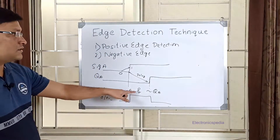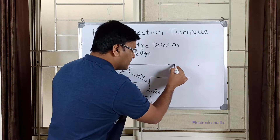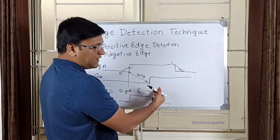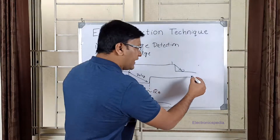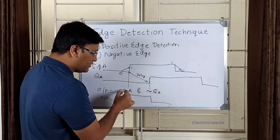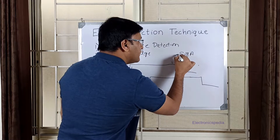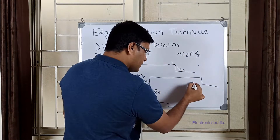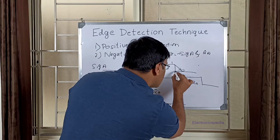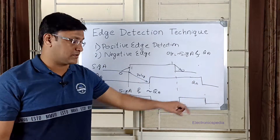Similarly, if I want to capture a negative edge — which is a signal changing from one to zero — I feed the same signal to the D flip-flop again and it gets delayed to give QA. Instead of using the inverted QA, I use the inverted version of signal A, then AND it with QA. In this window we will get a pulse — this is the negative edge detection.